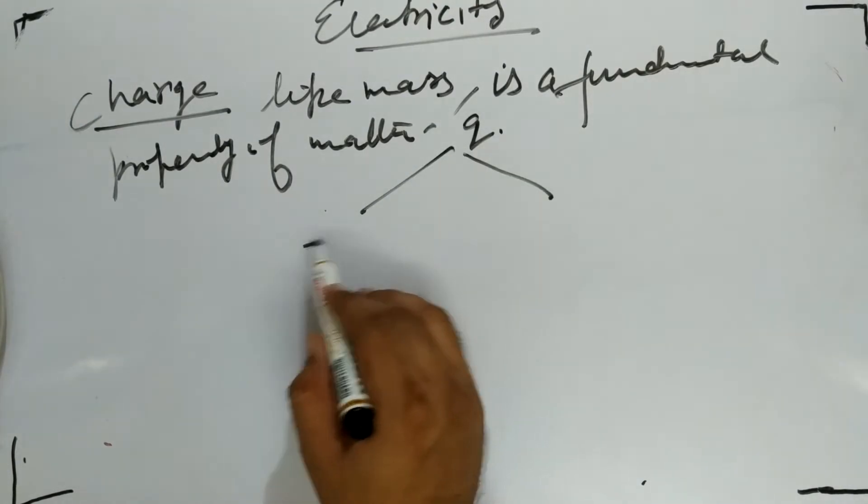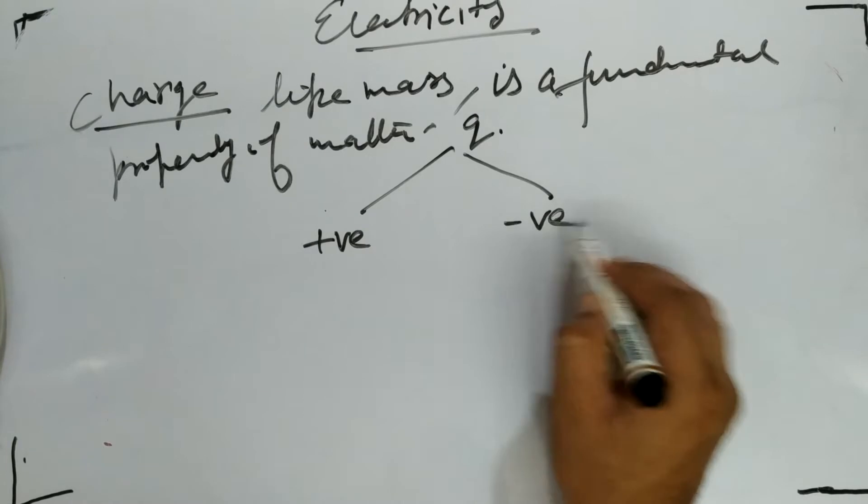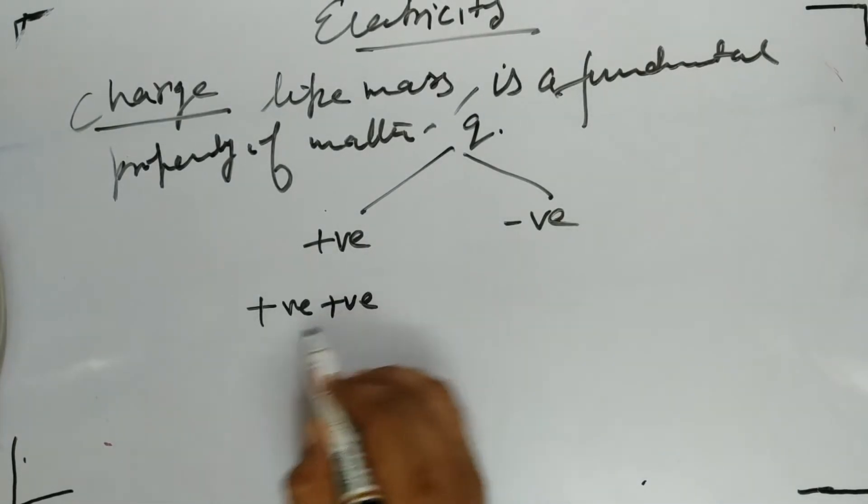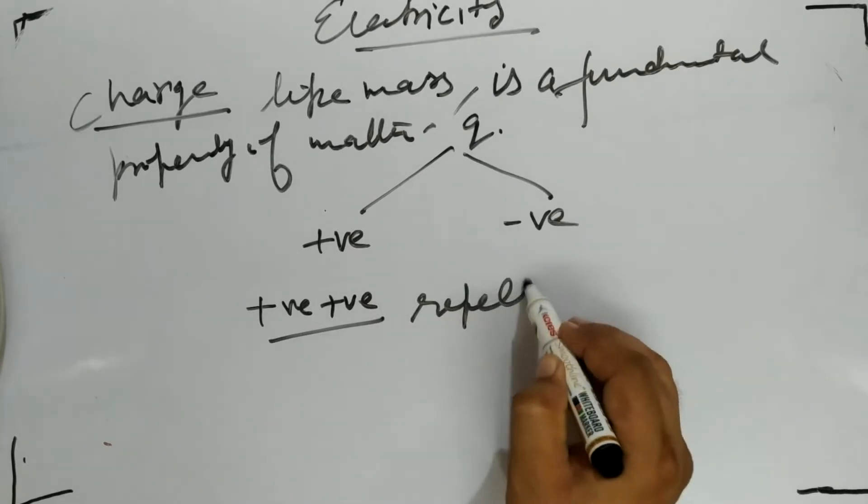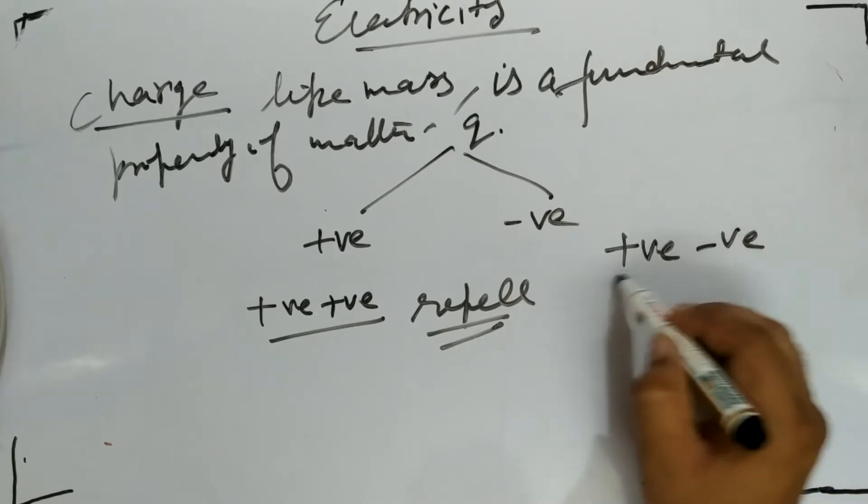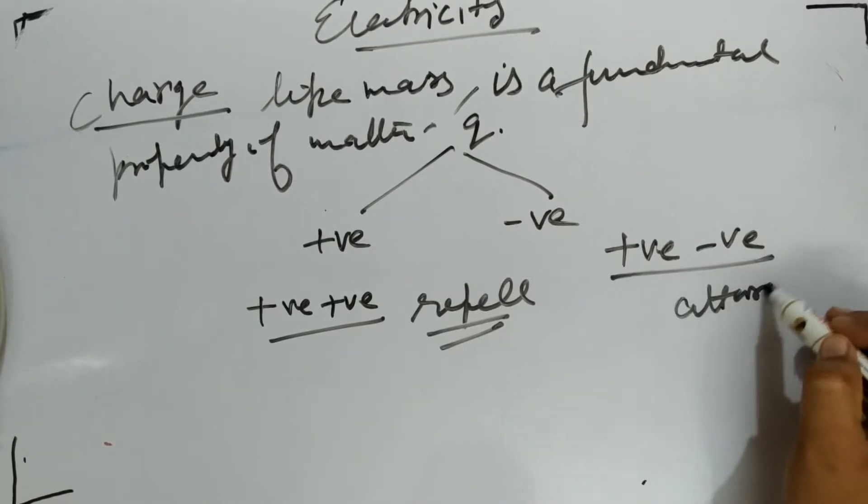two types: positive and negative. Positive charges will repel each other. Positive and negative charges will attract each other.